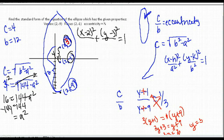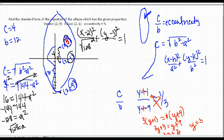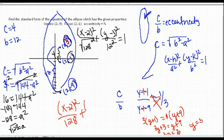Subtracting 144: −A² = −128, so A² = 128. Plugging everything in, our final answer is (x − 2)² / 128 + (y − 3)² / 144 = 1.